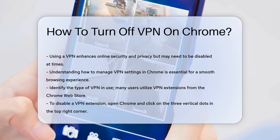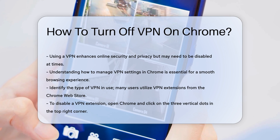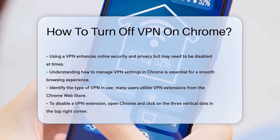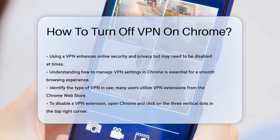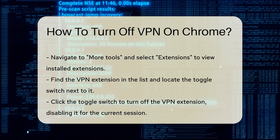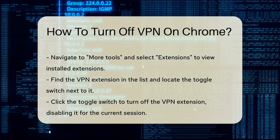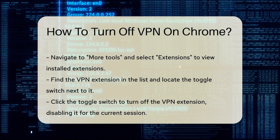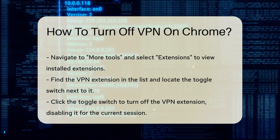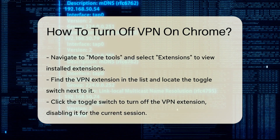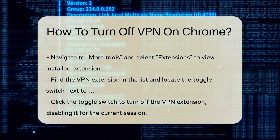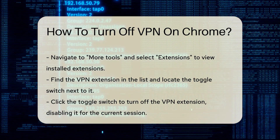First, identify the type of VPN you are using. Many users opt for VPN extensions available in the Chrome Web Store. To disable these extensions, open your Chrome browser and navigate to the top right corner. Click on the three vertical dots to access the menu. From there, select More Tools, followed by Extensions. This will display a list of all installed extensions.